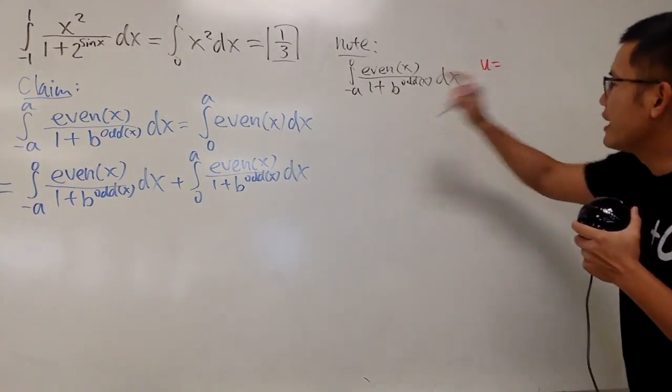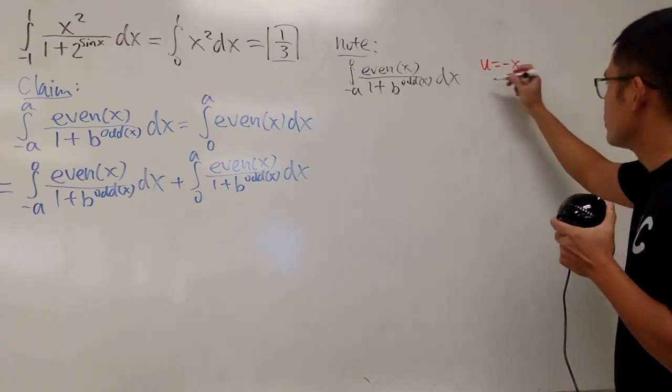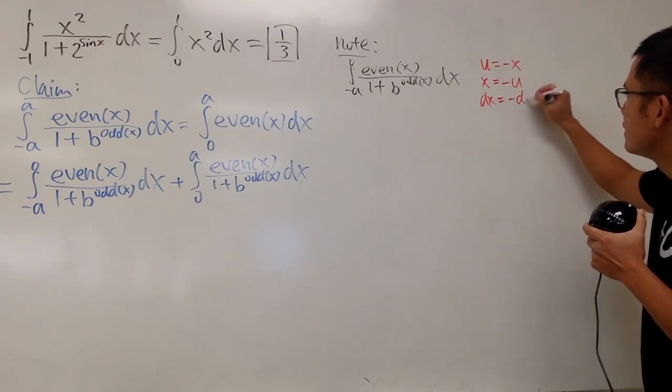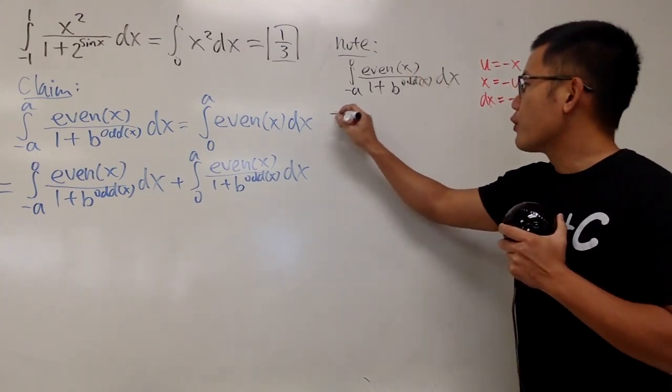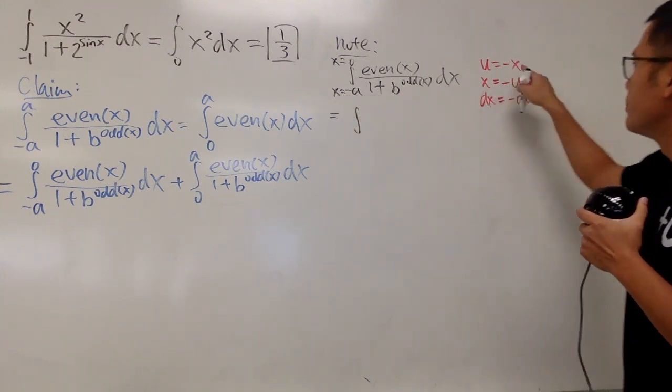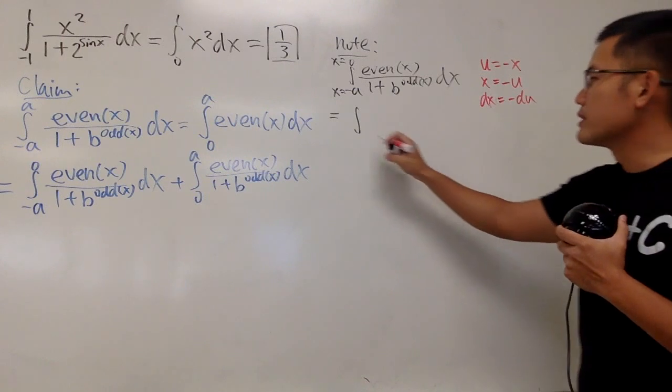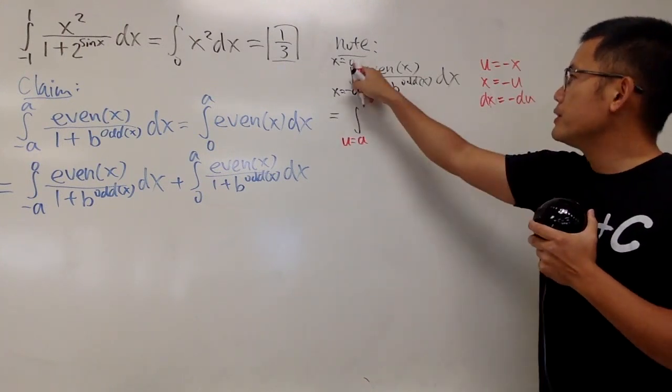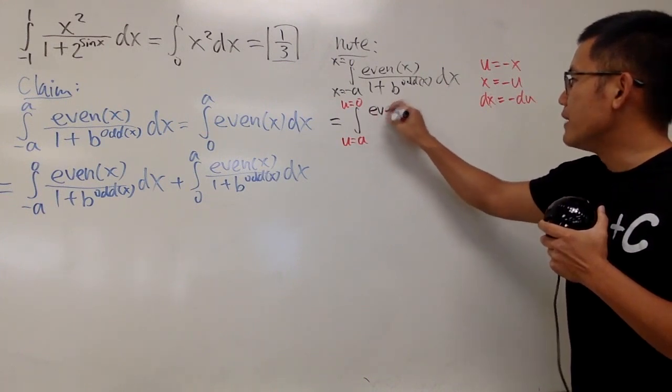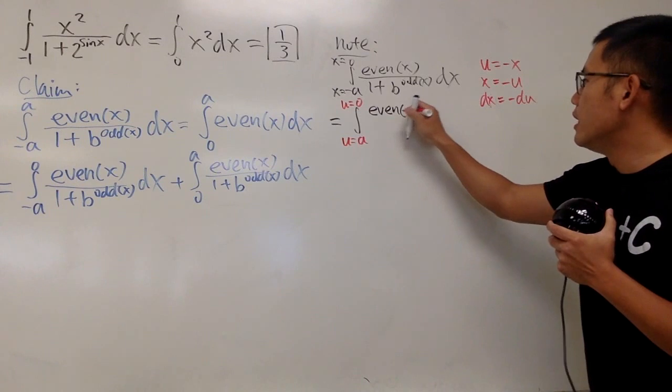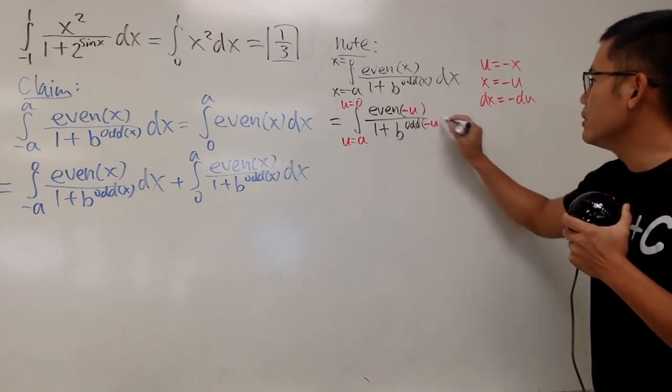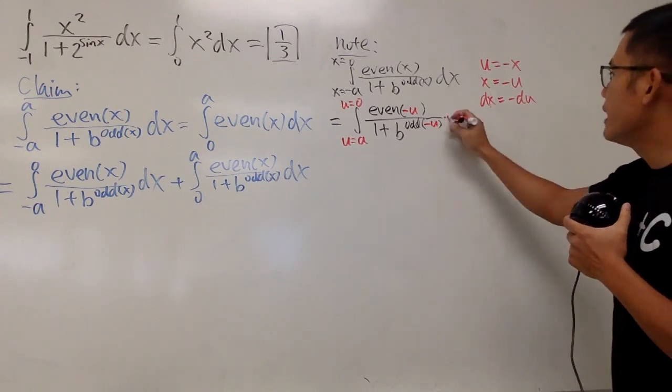Then u equal to negative x. And of course, let's just do the work. x is equal to negative u, and of course, differentiate that. We get dx equals negative du. And now, put this back here. But, of course, don't forget, this is x going from negative a to 0. Well, take this to a u world. When x is negative a, put it here, u will be negative negative a. Of course, u will be starting at a. Put 0 here, you will still be end up with 0 like that. And now, let's see. On the top, we have even, but x is the same as negative u, so we just enter negative u here, over, this is 1 plus b, and this is odd of negative u, like this. And dx is, of course, right here, namely negative du.